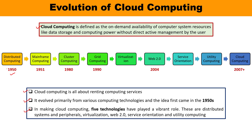Distributed computing has various advantages in terms of scalability, concurrency, continuous availability, independence, and failure tolerance. When computer system resources are distributed, the failure of one resource does not impact services to other users. But the limitation remains that all resources must be at the same geographical location.